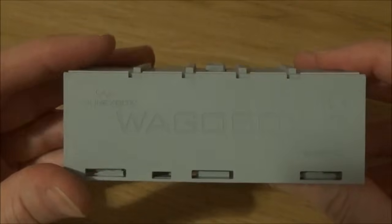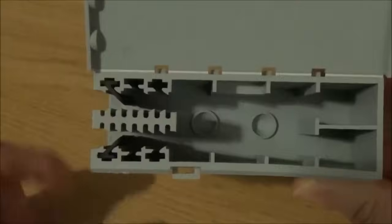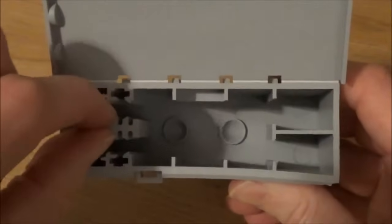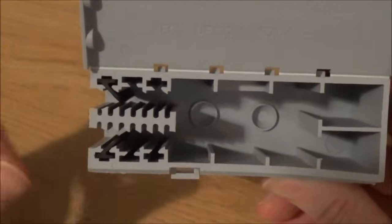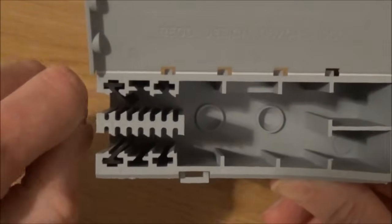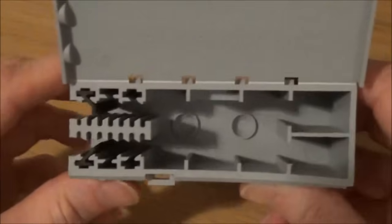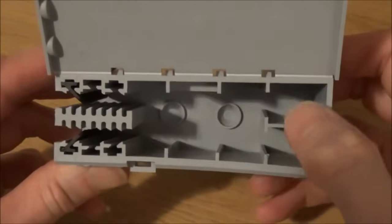This is the Wago box junction box. Flip the lid open. The cables enter the box, they grip in there so they don't require fastening outside of the box and this prevents them from being pulled from the connector blocks. The connectors just sit in this end compartment there.